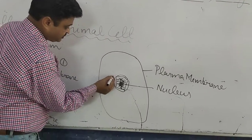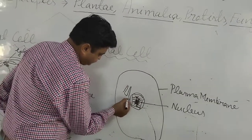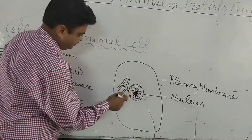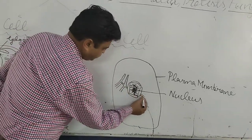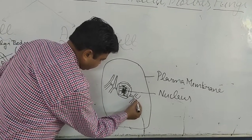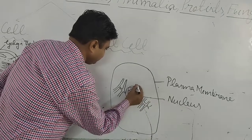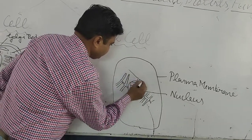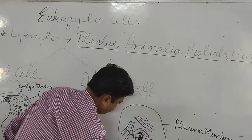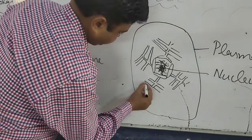Tube-like structures are found all around the animal cell, known as endoplasmic reticulum. These endoplasmic reticulums provide shape and structure to the cell. The animal cell has its particular structure due to the presence of these endoplasmic reticulum.